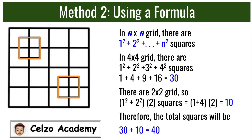Since we have 2 additional 2x2 grids inside the square, we will first calculate 1² plus 2², then double it. So 1² plus 2² is 1 plus 4, and then we double it, giving us 10. So 10 plus the original 30 gives us 40 squares total.